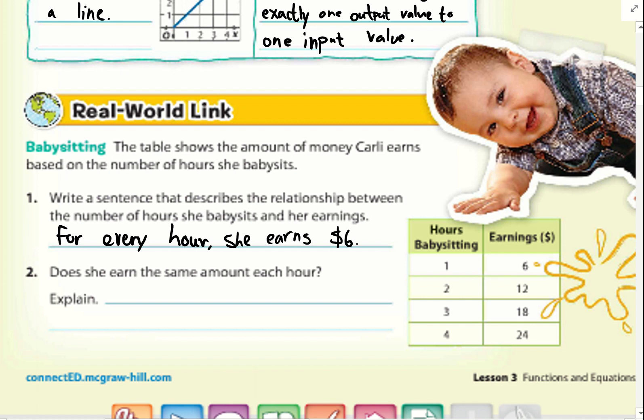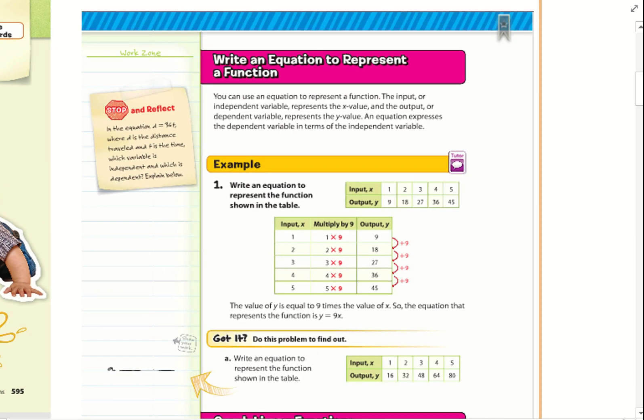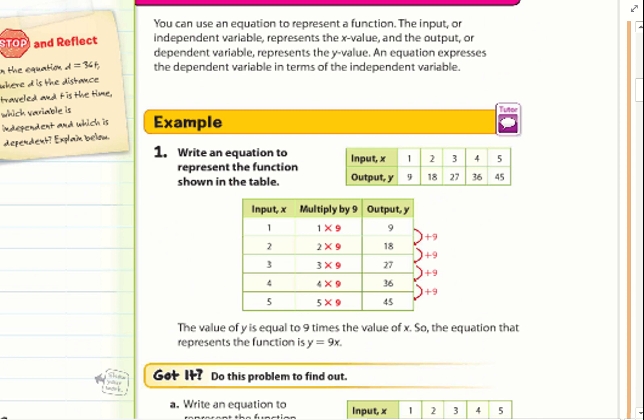Does she earn the same amount each hour? Explain. Yes, her earnings increase by six. Also, for future reference, if we were to graph this, these would be my x coordinates, these would be my y coordinates. And this is also going to be my input and my output. So I want you to write that down. That way, this is going to be an easier introduction into the next lesson.